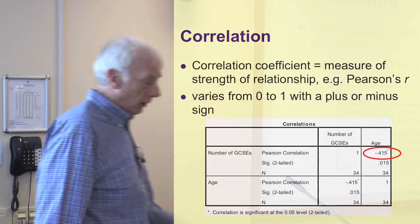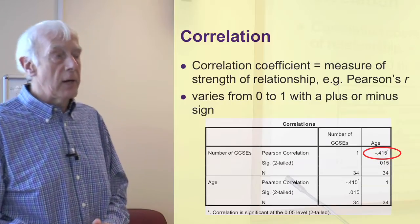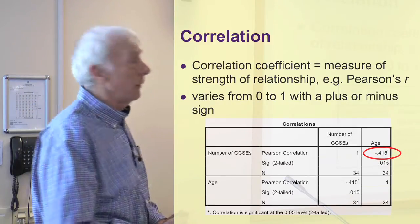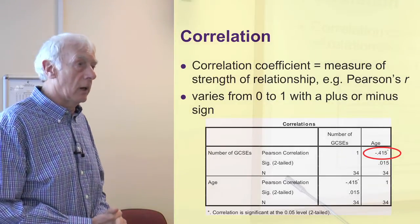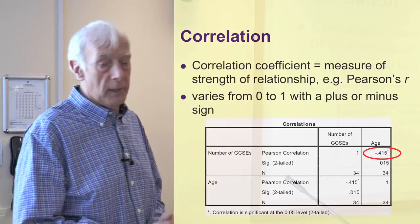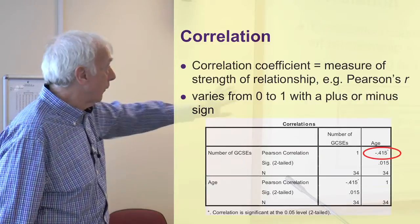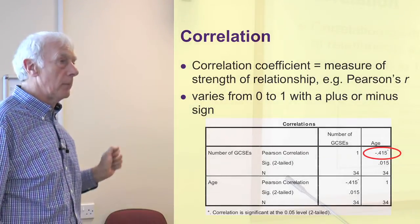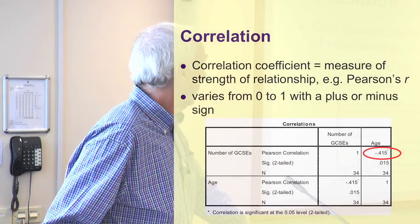I've used the term correlation a lot here because that's what we're looking at. Correlation is measured by a few statistics — in particular, if it's a normal distribution we can use Pearson's r to measure the strength of a correlation. Here's the output you get from doing a very simple correlation in SPSS.